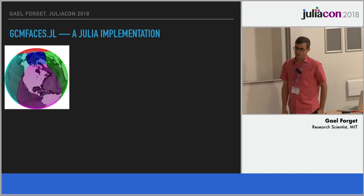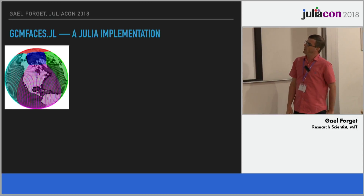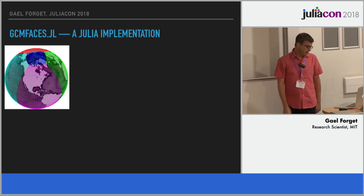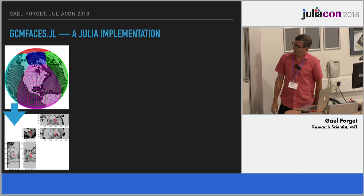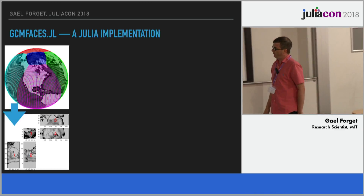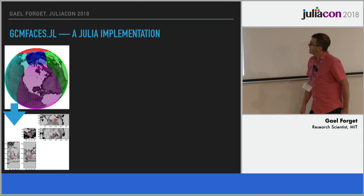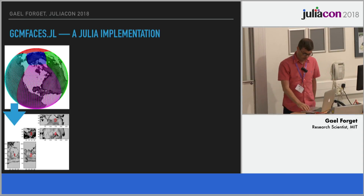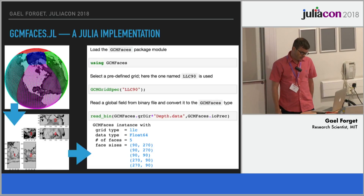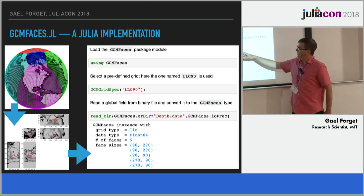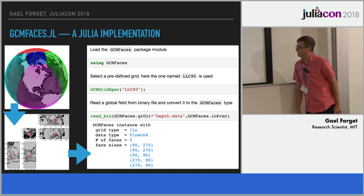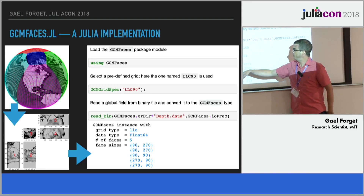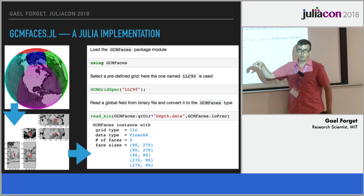Let's start with how I went about implementing a representation for those things in Julia. This is the main purpose of this package I created, which is called GCMFaces.jl — GCM stands for general circulation model. This is that five-face grid I was describing, laid out on a plane with five different faces of different sizes and orientations. In Julia, I simply put that type of representation into a custom array format, and this is the result of the show method I've overloaded for my data type — it gives the grid type, in this case LLC.